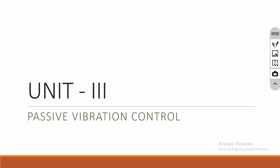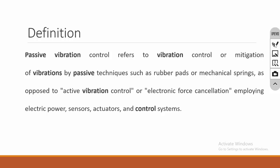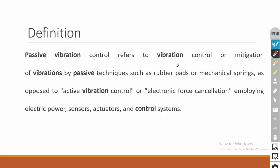In passive vibration control we are not going to give any energy input; the system itself will control the vibration without any external input. Passive vibration control refers to vibration control or mitigation of vibrations by passive techniques such as rubber pads and mechanical springs, as opposed to active vibration control.